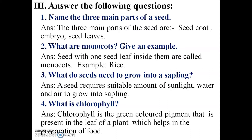The three main parts of a seed are: seed coat, embryo, and seed leaves. The seed coat is the outer covering of a seed. The embryo is the inner part of the young plant. Inside the seed coat, seed leaves are present.